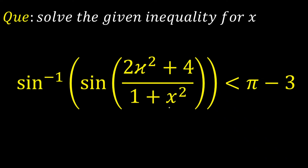Hello everyone. Today we are going to look at a problem from inverse trigonometric functions. The question is: find the value of x for which this given inequality is satisfied. The given inequality is sin inverse of sin of (2x² + 4) divided by (1 + x²), which is less than pi minus 3.